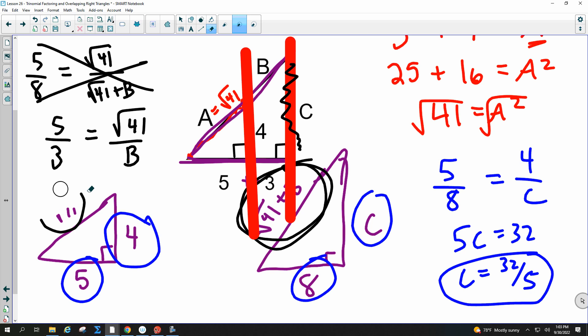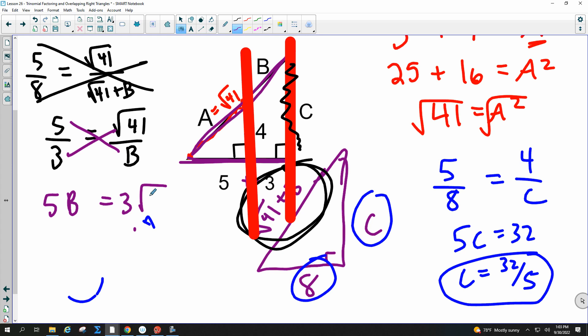So if you do this, which I would recommend, then we would cross multiply. I'll just show you because it's got that radical in there. This would be 5B. This would be 3 root 41. So you just leave that lovely root 41. You don't have to do anything. And then divide by 5. So your final answer for B is 3 root 41 over 5. You would get the same thing if you did it this way. It's just way more work. So I would use the parallel lines and proportional segments for that.